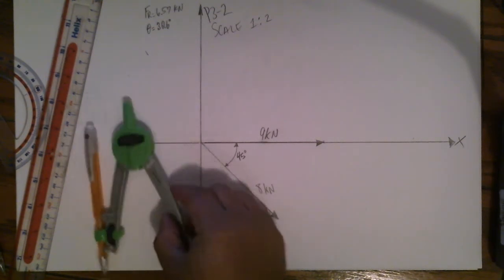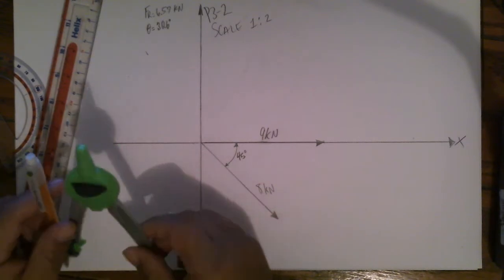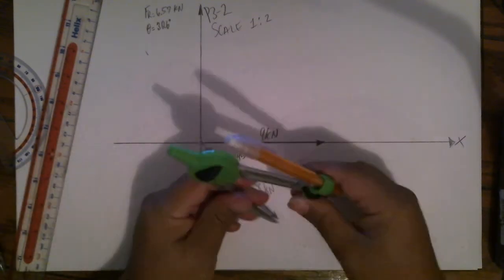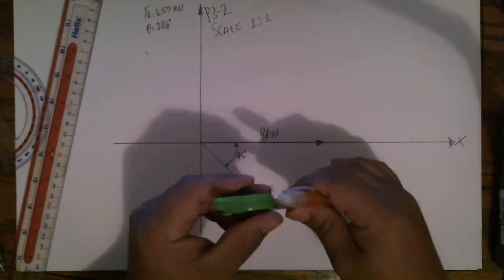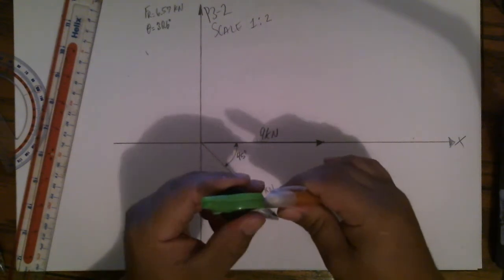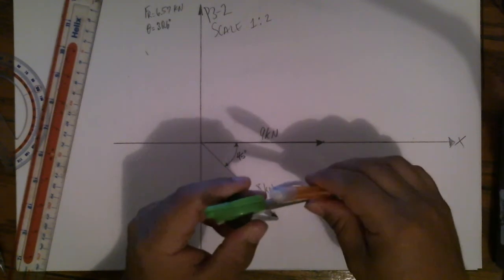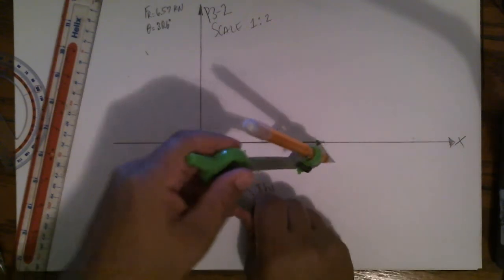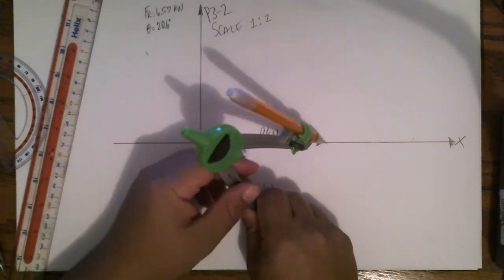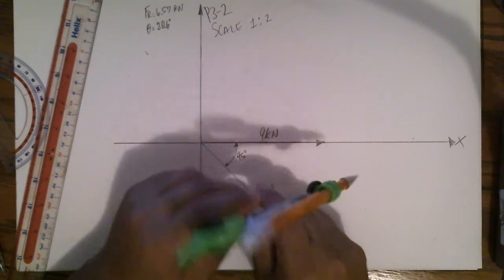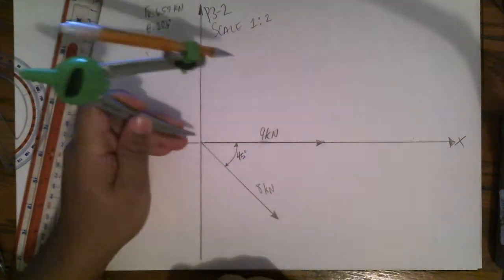So first place the protractor at the tip of the 8 kilonewton force. Adjust the protractor until the other end is aligned with the tip of the 9 kilonewton vector. Attach the protractor to the origin and draw a circle.